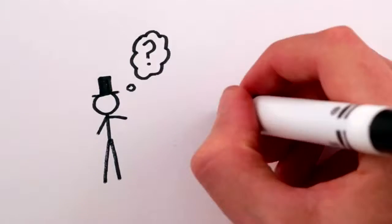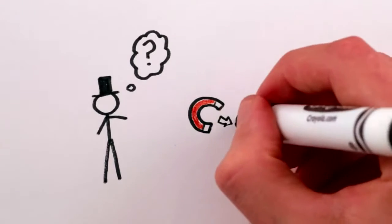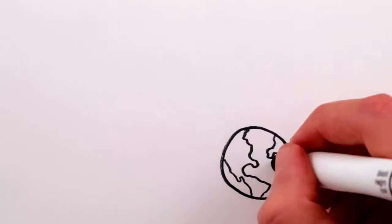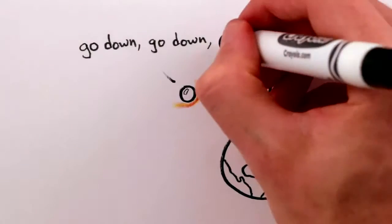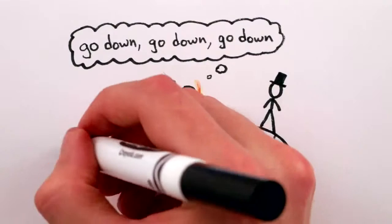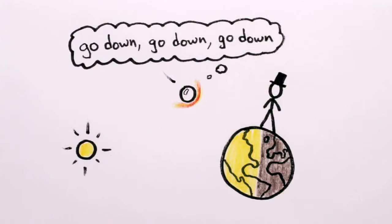Before then, we didn't really know why magnets could repel or attract each other from far away, how a ball could know that it was supposed to fall towards the Earth, or how the sun could light up the Earth. We just knew that they did. And this was a kind of spooky action at a distance.